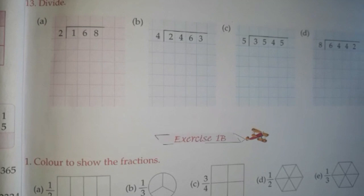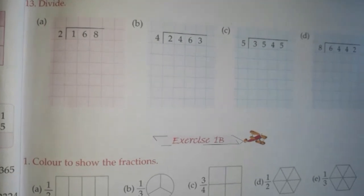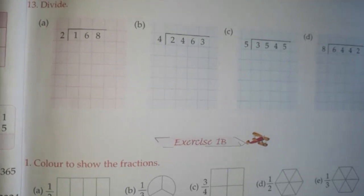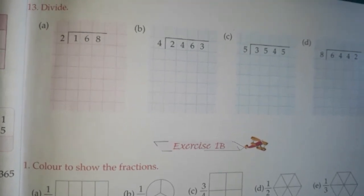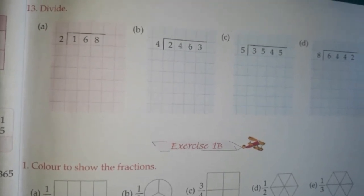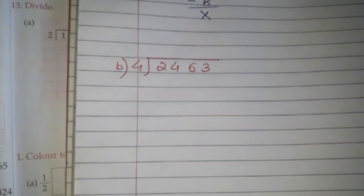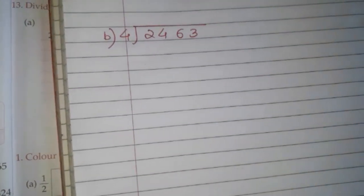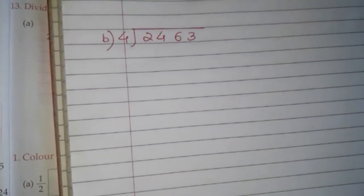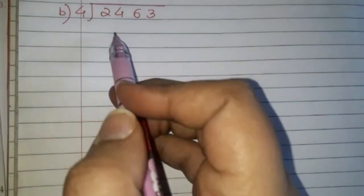The next question: we're going to divide a four-digit number by a one-digit number — 2463 divided by 4. We'll start with the leftmost number, which is 2.